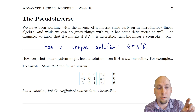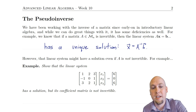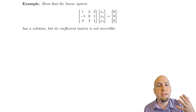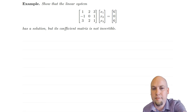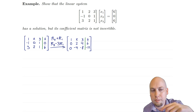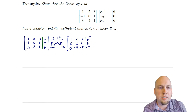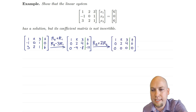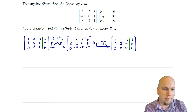Sometimes that linear system has a solution even though the coefficient matrix is not invertible. Let's go through an example to remind ourselves of how that can happen. We're going to show that there is a solution of this linear system, but that the coefficient matrix on the left is not invertible. We'll solve both of these problems via Gaussian elimination — writing down the linear system in augmented matrix form and doing row operations to get to row echelon form. Just three row operations is enough to get there.